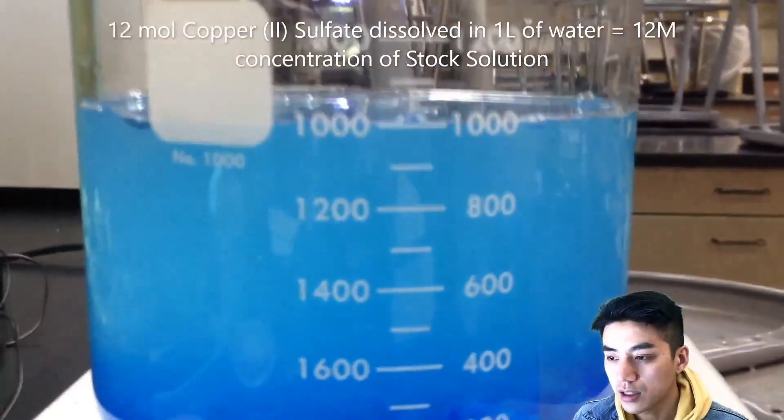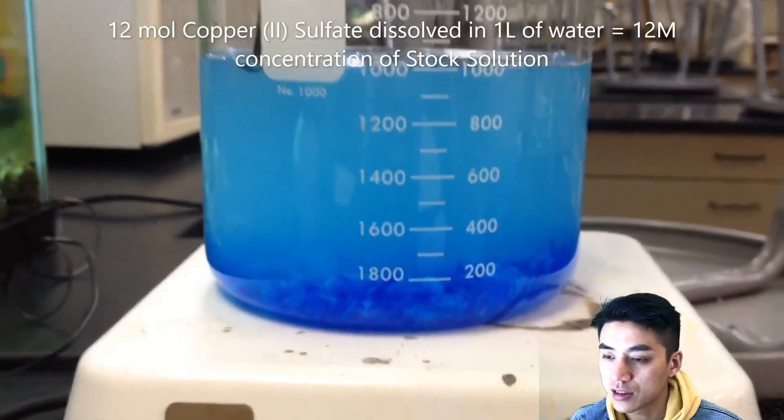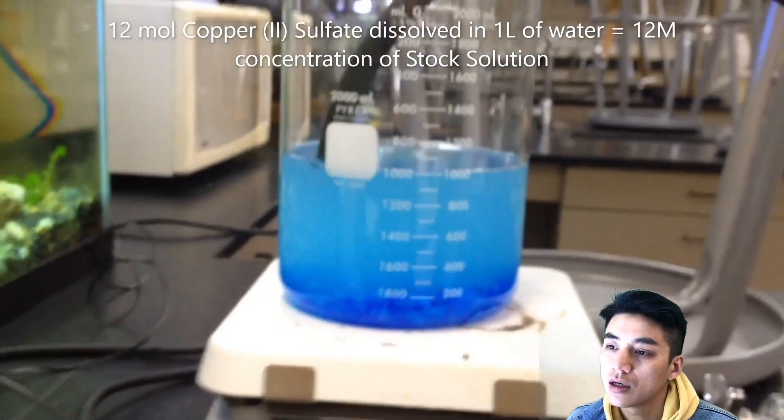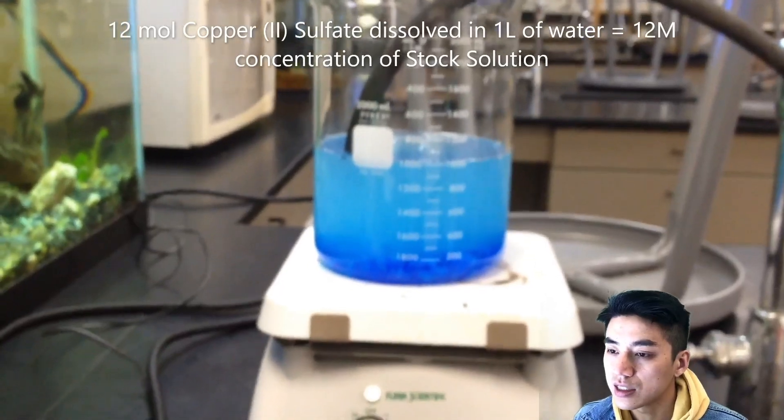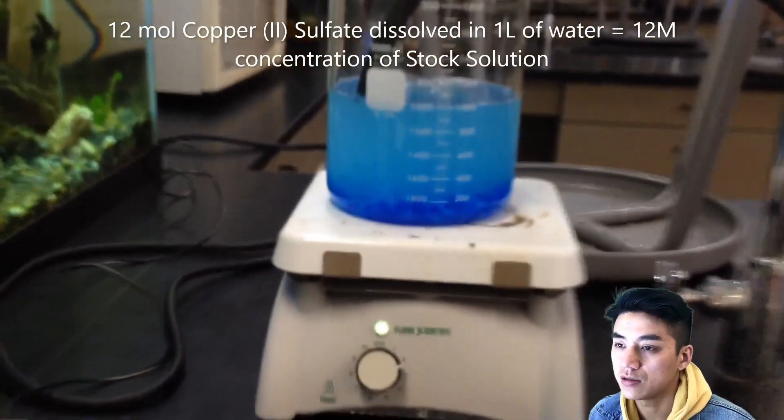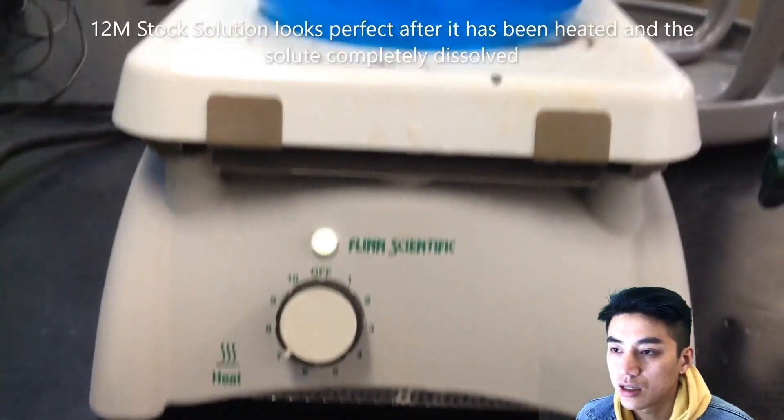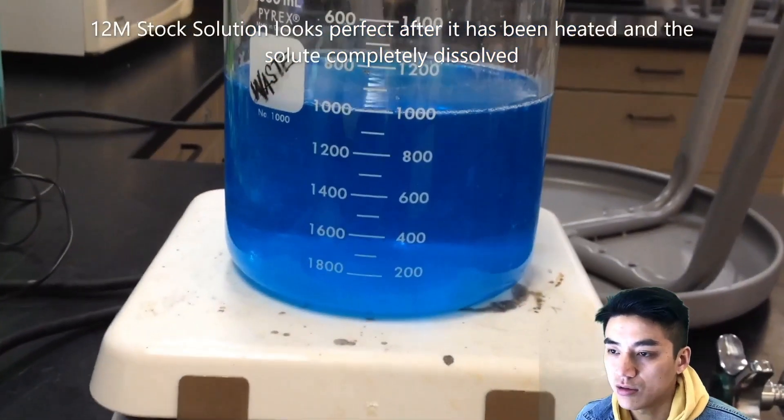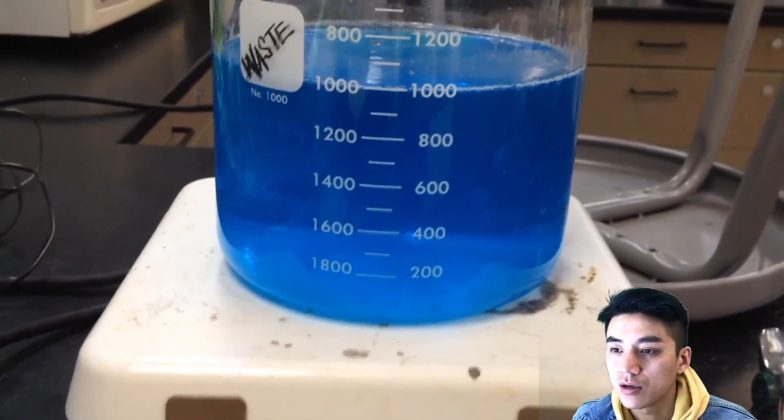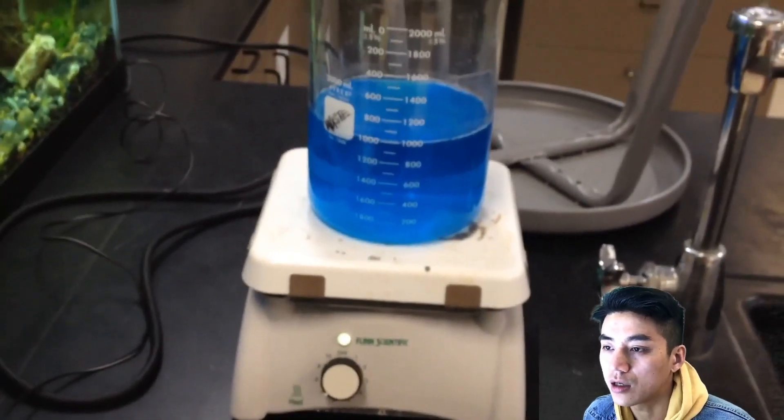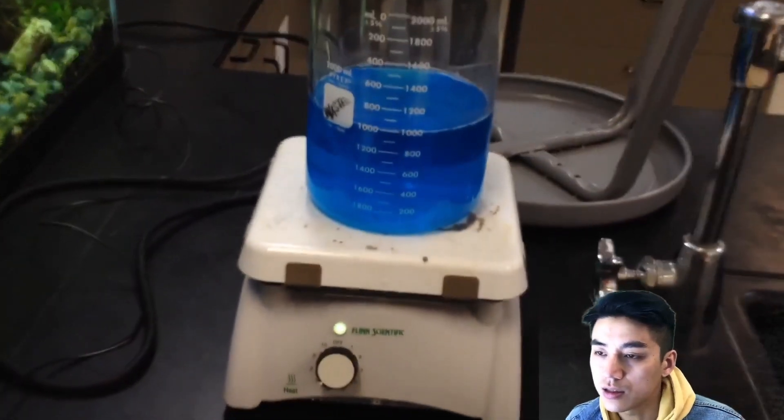At this point, all I have to do is just heat it up and then stir until everything is perfectly dissolved. You'll see here in the next clip what it looks like. Here it is, a perfect 12 molar solution, and we are ready to start diluting and making watered down solutions.